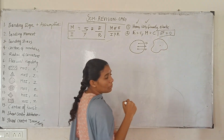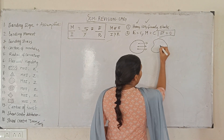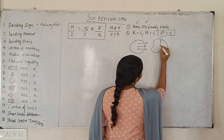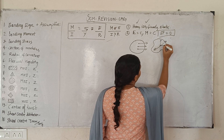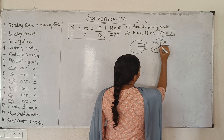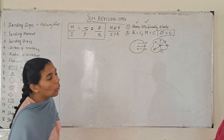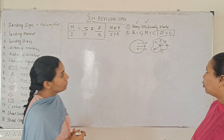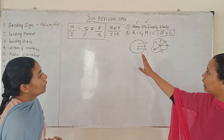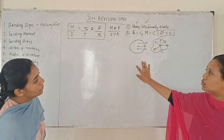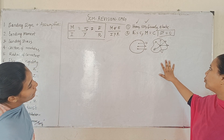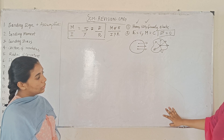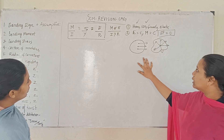Isotropic means it has the same elastic properties at a point in any direction. So homogeneous and isotropic — these are the two parts.